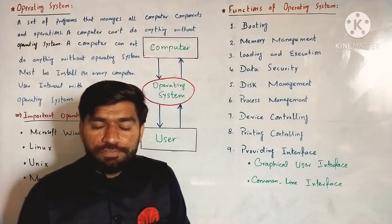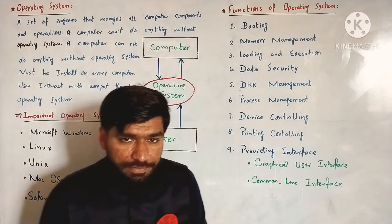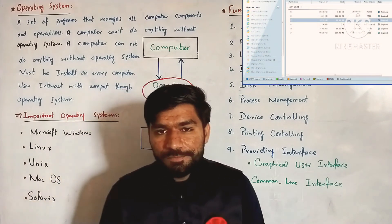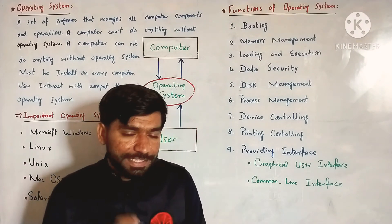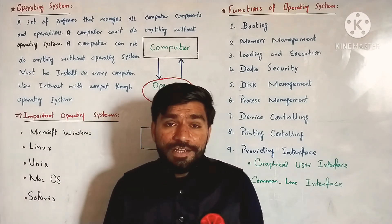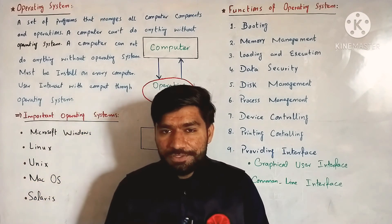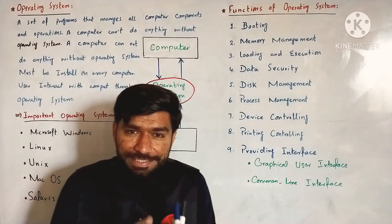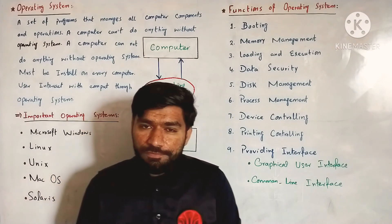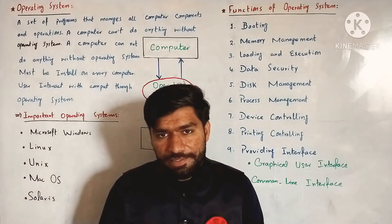The fifth function is disk management. Our computer has a hard disk. We can logically divide the hard disk into partitions — C, D, E, F and so on. The operating system manages different files and folders through disk management.